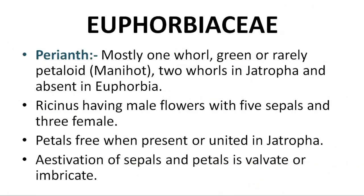Description of Ricinus communis: perianth is mostly one-whorl, green or rarely petaloid. In Jatropha there are two whorls (dichlamydeous). In Euphorbia, perianth is completely absent. Ricinus has male flowers with 5 sepals and female flowers with 3 sepals. Petals are free when present, or united in Jatropha. Aestivation of sepals and petals is valvate or imbricate.